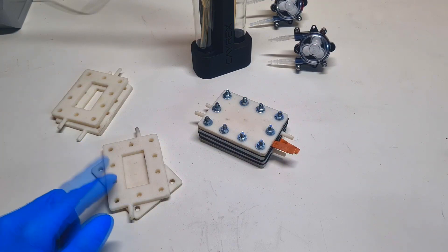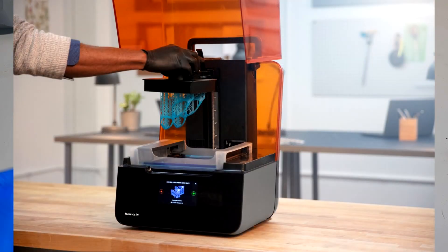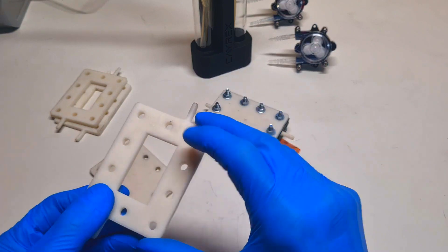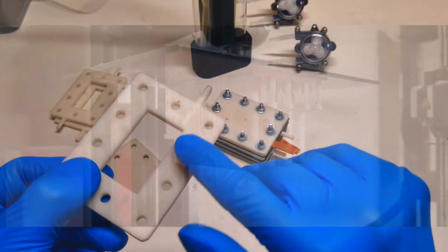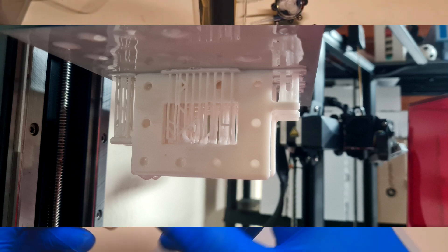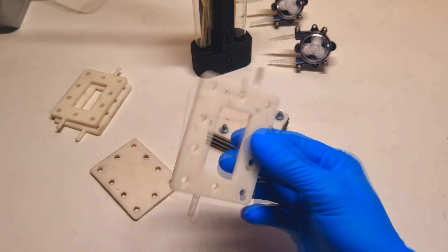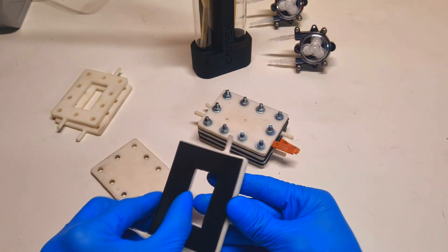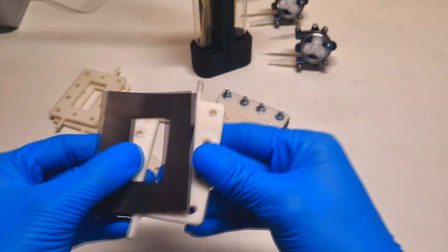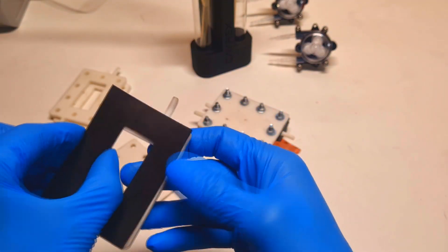When you print these plates I recommend using a resin printer, because with a resin printer you will get a really nice and smooth surface of these plates, which is actually really important because on the top of this plate you will put some gasket. The smoother the surface of this plate, the better the sealing will be.